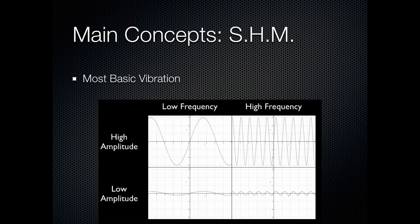Simple harmonic motion is the most basic vibration that you can have, or fluctuation in air pressure, any kind of motion of a pendulum or of a wave. It's characterized by two main attributes: amplitude and frequency. Amplitude being usually described as volume, and frequency being usually described as pitch.